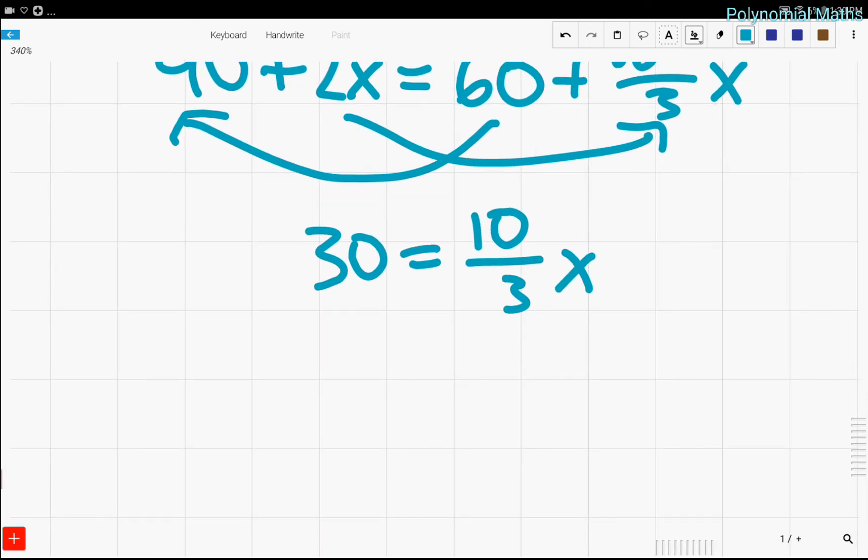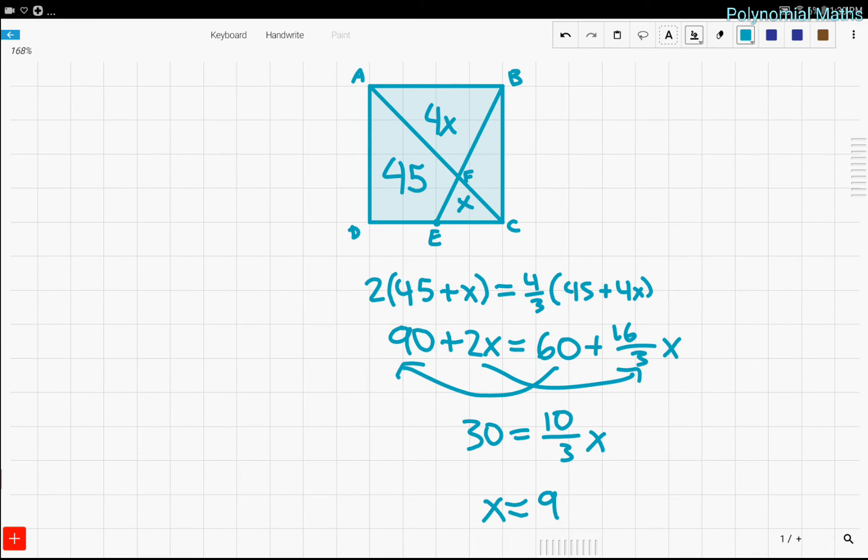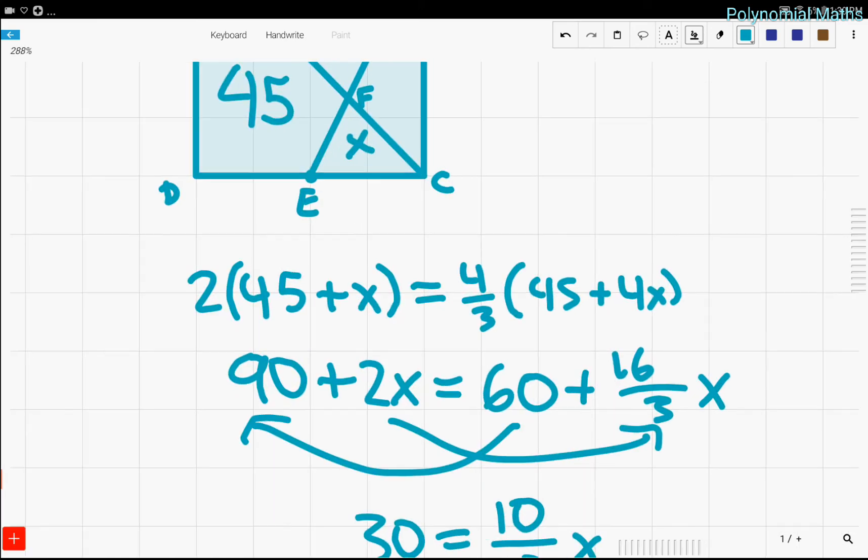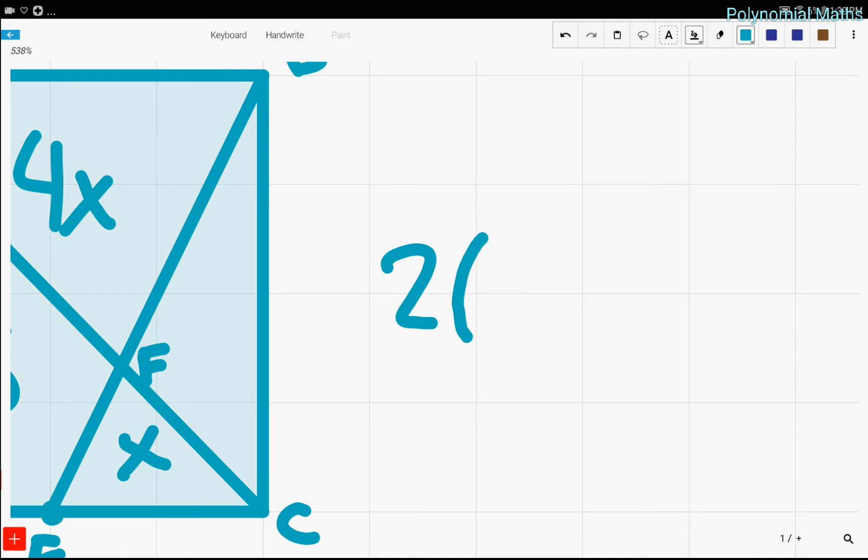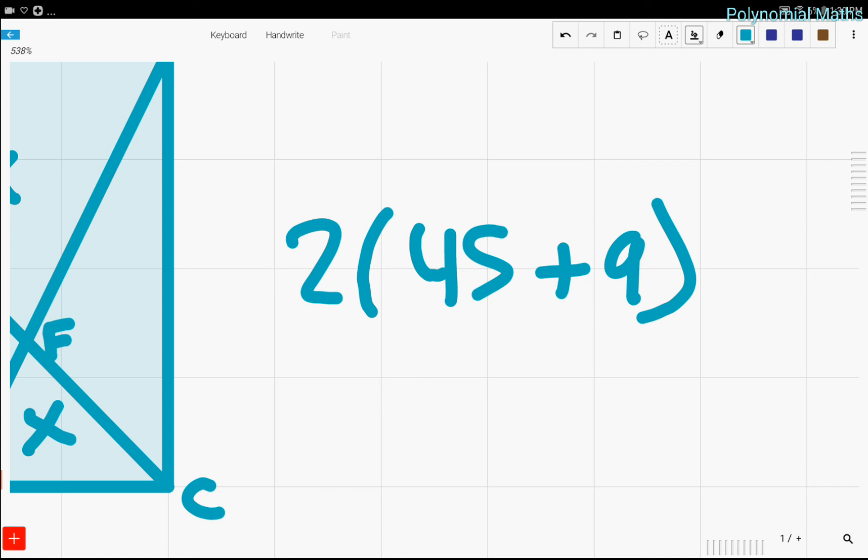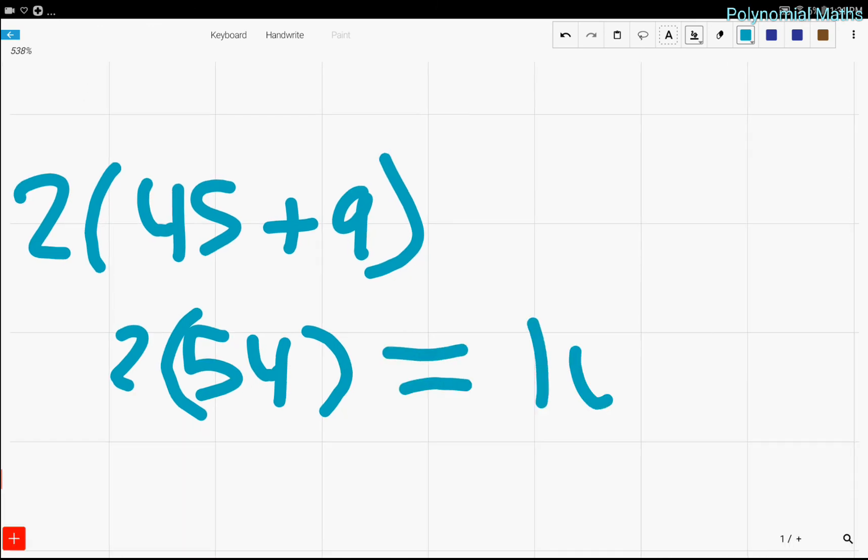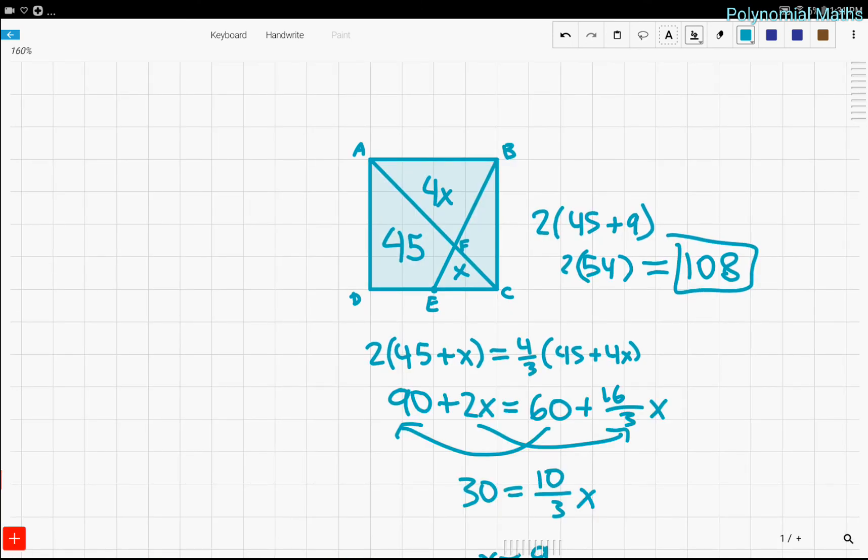And then we finally find that X equals 9. And now we can plug 9 back in. Since we know that 45 plus X times 2 is the area of the square and that's what we're finding, we'll just do 2 times 45 plus 9, and 45 plus 9 is 54. So 2 times 54 is equal to 108. And that is the area of the square and we're done because that's what the problem asked us to find.